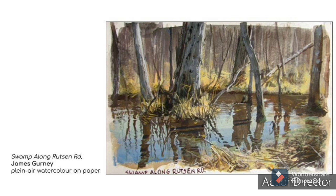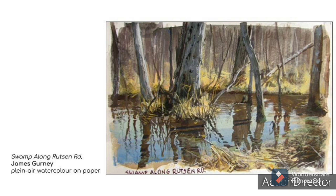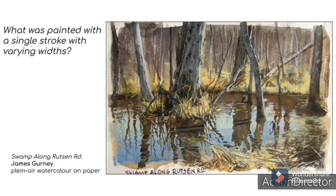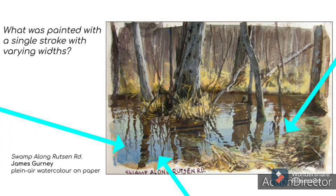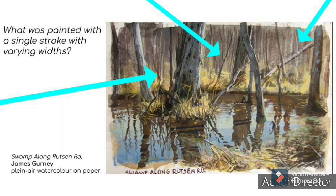This piece is called Swamp Along Rutsen Road. It's another plein air painting by James Gurney made with watercolour on paper. So what was painted with a single stroke with varying widths? The tree bark was done by carefully doing lines that vary in widths to create the texture. The reflections in the water are done with lines that vary in width as well as turn back and forth. And the tree branches, just like the ones you practice, are done with a paint stroke with varying width.